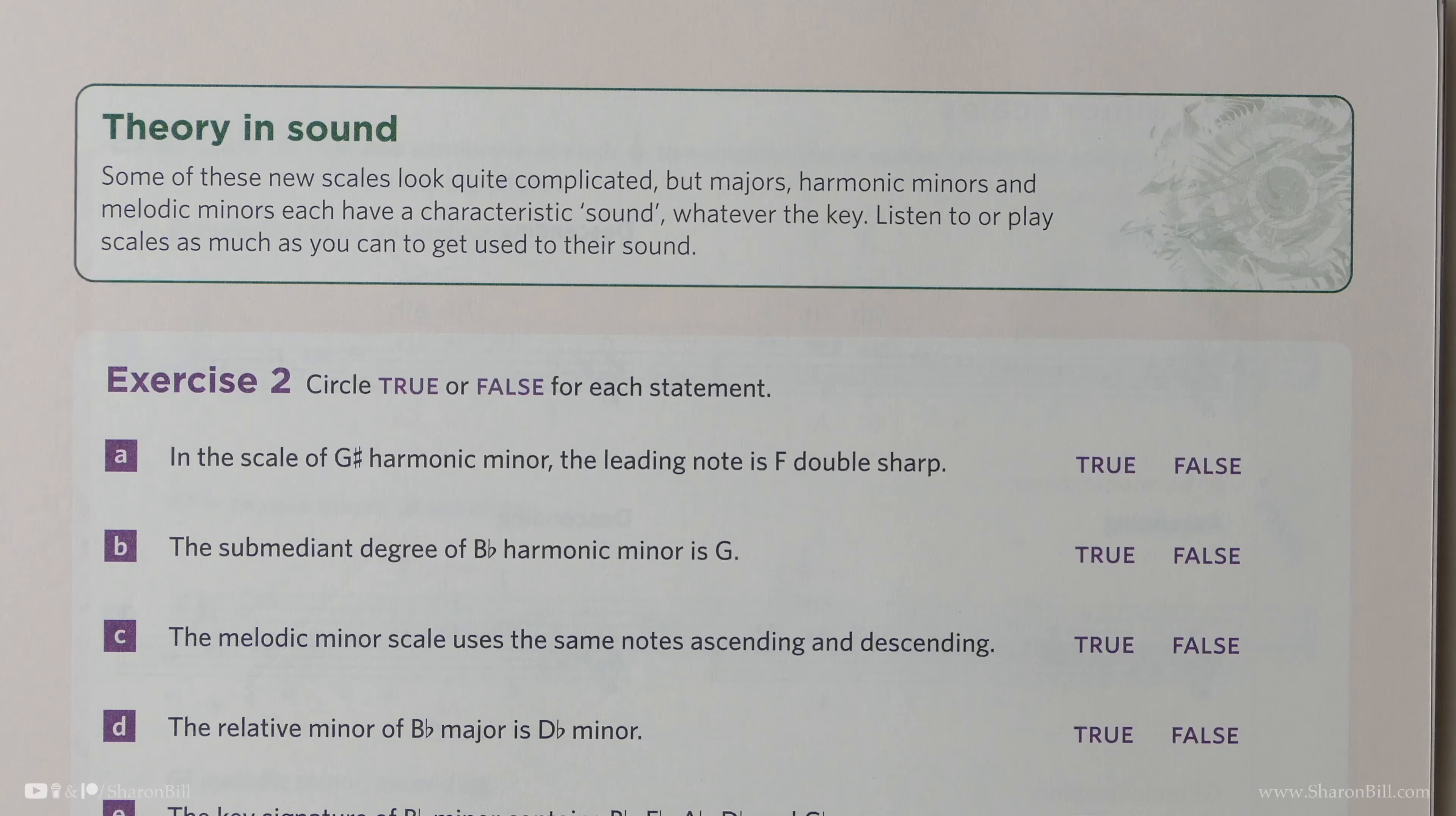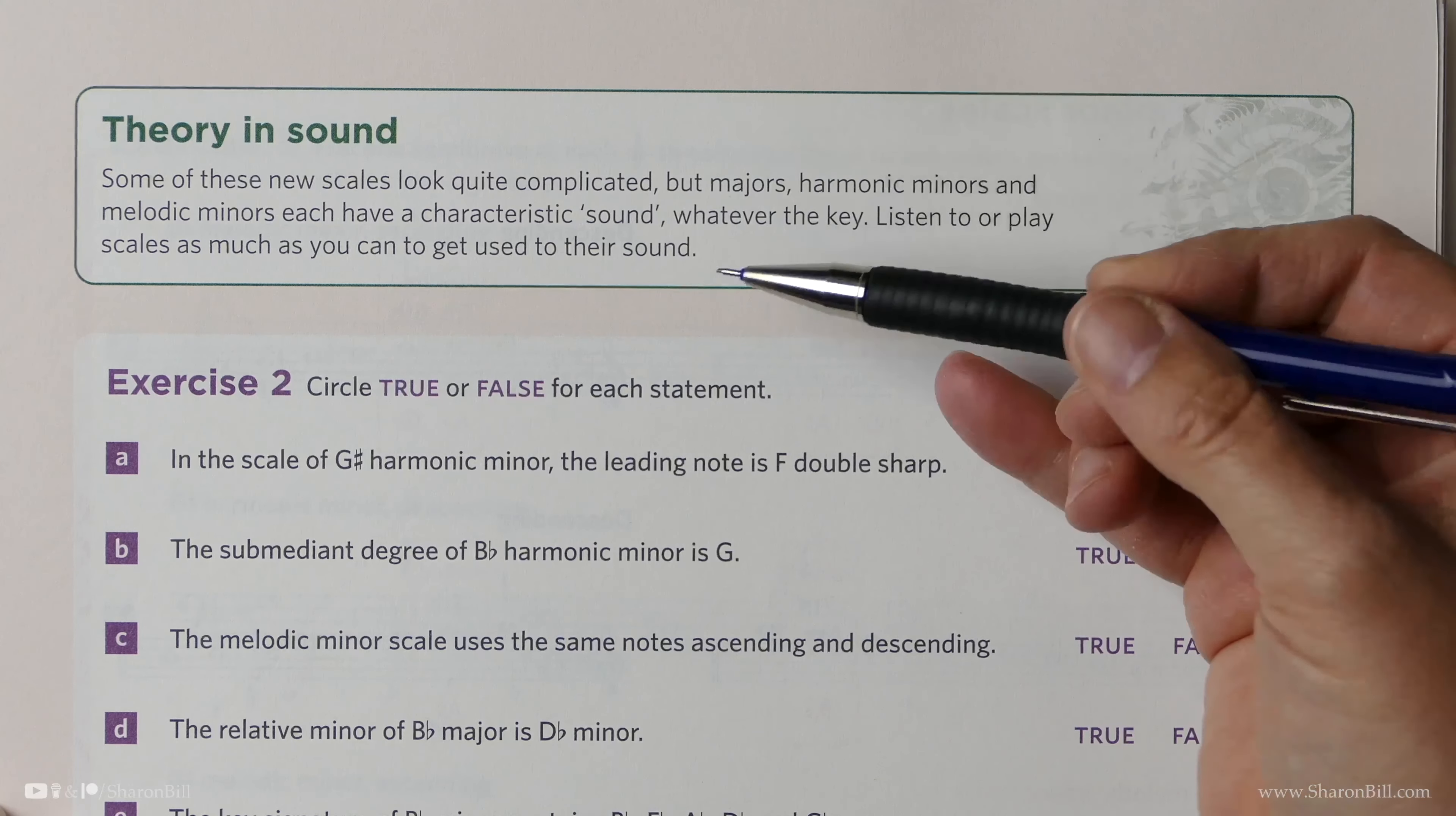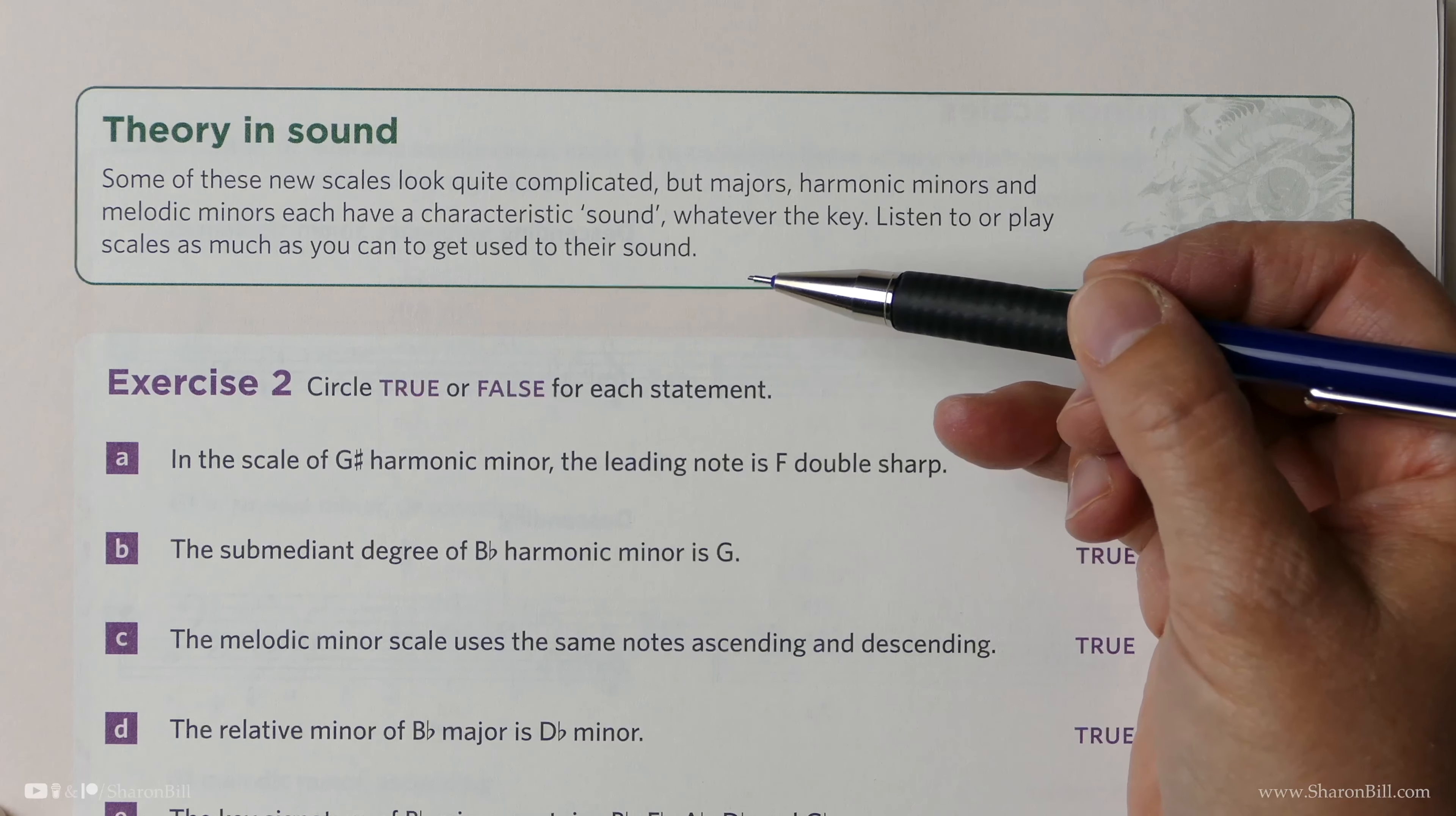We turn now to page 32 in the Grade 4 Discovering Music Theory workbook, and we're continuing to look at minor scales. Here we are suggested to have a repeated go at playing these scales so that you can get used to their sound, so you can hear where there's a raised 7th or a raised 6th or 7th.